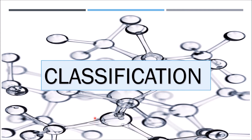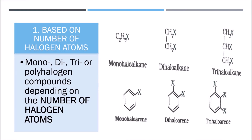The first way to classify haloalkanes and haloarenes is on the basis of the number of halogen atoms present. As you can see, in the case of ethane, when one hydrogen atom is substituted by one halo group, we get a monohaloalkane.